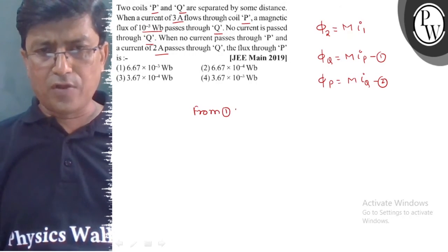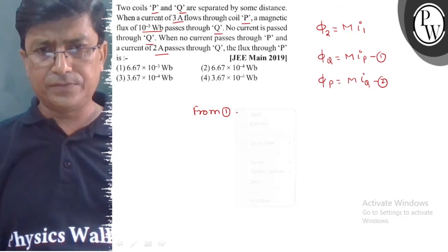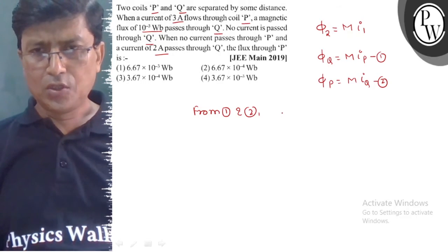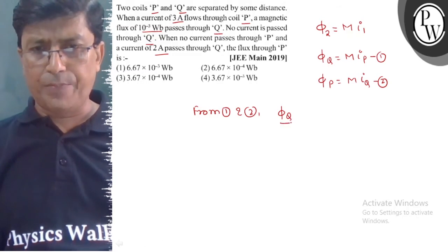From equations 1 and 2, φQ upon φP equals IP upon IQ.